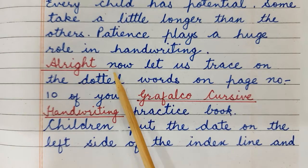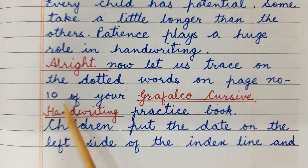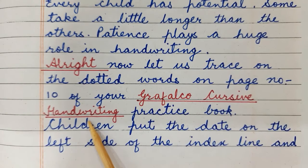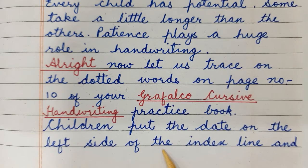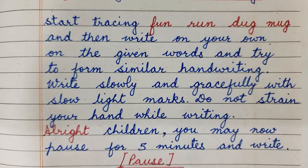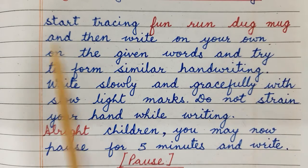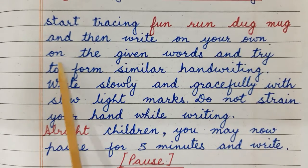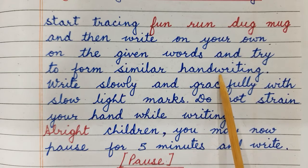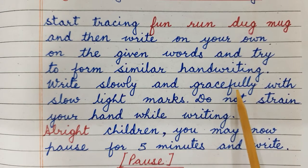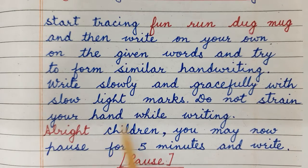Now let us trace the dotted words on page number 10 of your Grafalco Cursive Handwriting Practice Book. Children, put the date on the left side of the index line and start tracing: fun, run, dug, mug. Then write on your own on the given words and try to form similar handwriting. Write slowly and gracefully with slow, light marks. Do not strain your hand while writing.